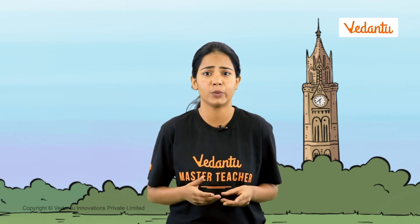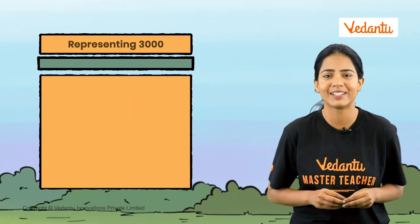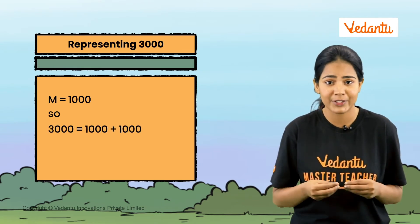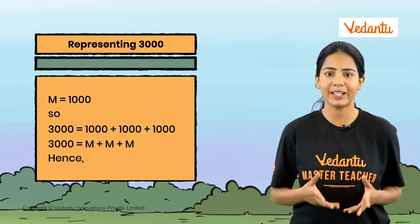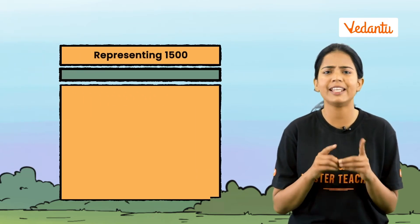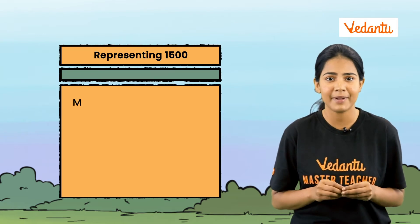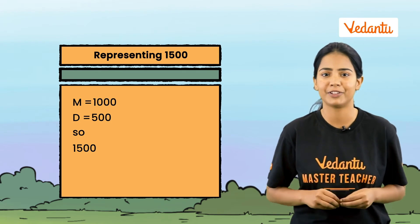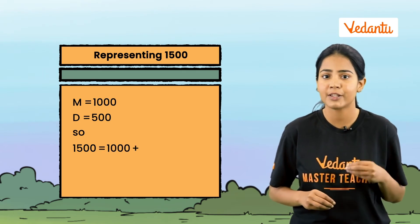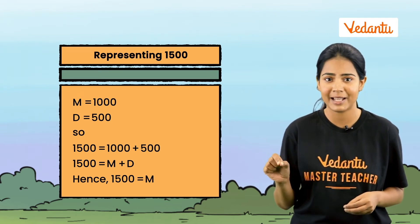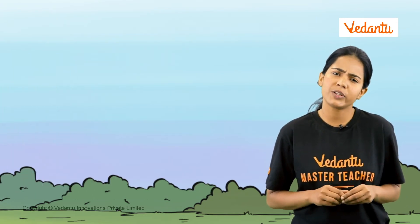Romans developed this numeral system 3,000 years ago. What if we were to represent 3,000 using Roman numerals? We represent one thousand as M, so 3,000 will be one thousand plus one thousand plus one thousand — hence 3,000 is MMM. How would we represent 1,500? M is one thousand and D is 500, so 1,500 is a thousand plus 500, represented as MD.